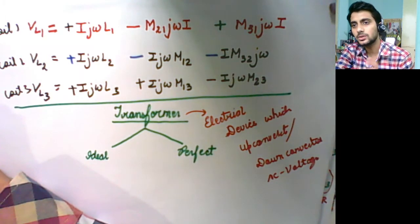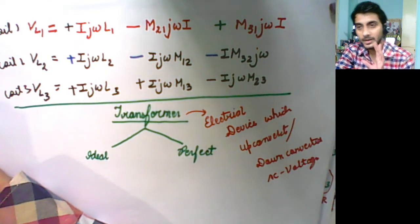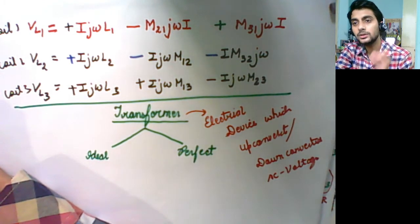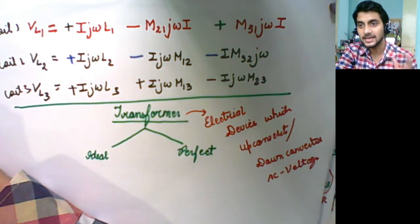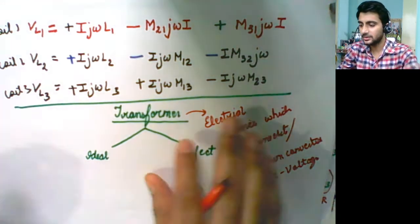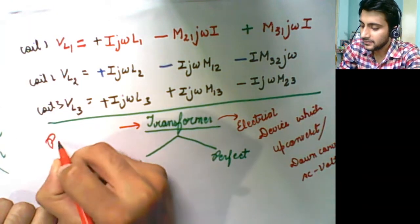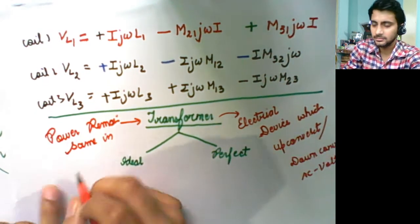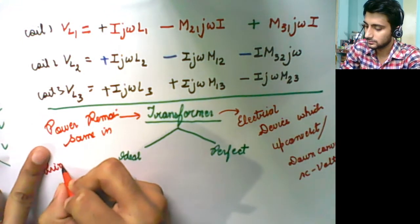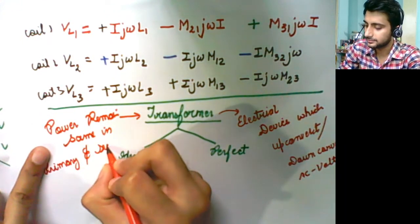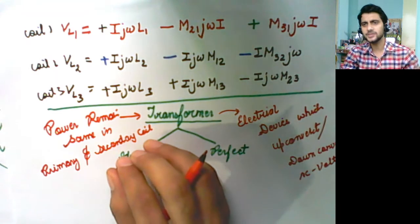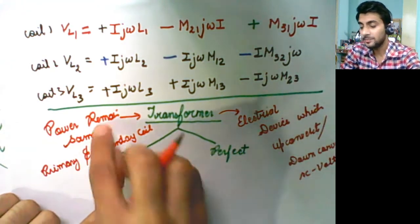So the transformer tries to up-convert or down-convert the voltage amplitude. But remember — it can only change the voltage. It cannot increase or decrease the power. The power in the secondary end and the primary end should remain the same. So in transformers, power remains the same in the primary and secondary coil. If we neglect dissipation, the power is the same at both ends.